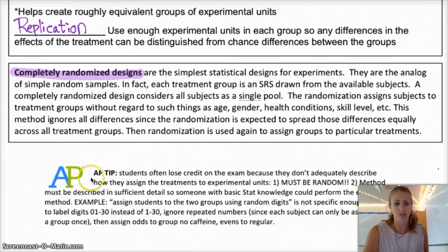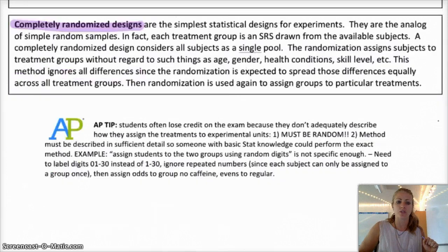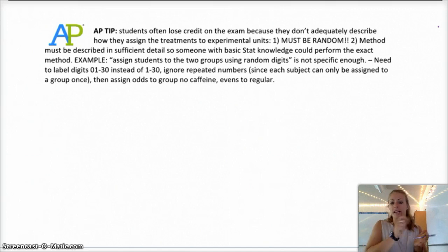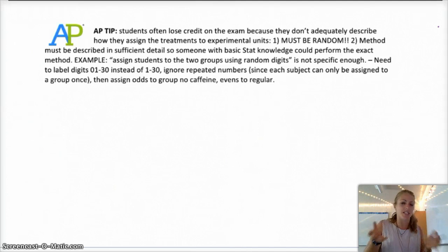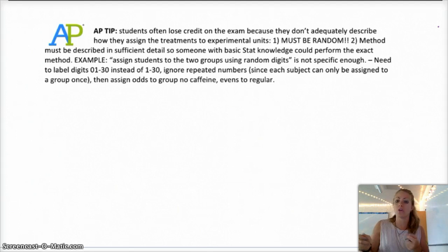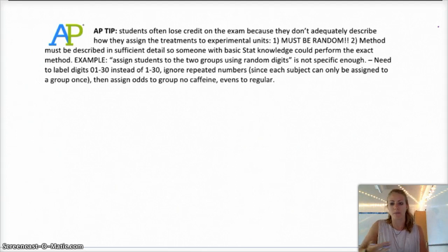An AP exam tip: people usually lose points if they don't truly describe how they're going to assign the treatments to the subjects or experimental units. You have to be able to write out the experiment as you would hand it to somebody else who has minimal knowledge of statistics. I like to think — if I can hand this to a freshman and they could actually do it, you're good to go. If they would be confused, you need more details. Include all the information someone would need to replicate your experiment without you there.